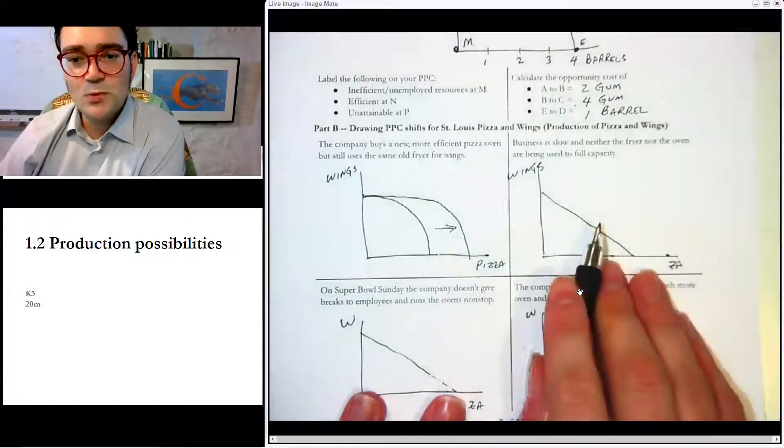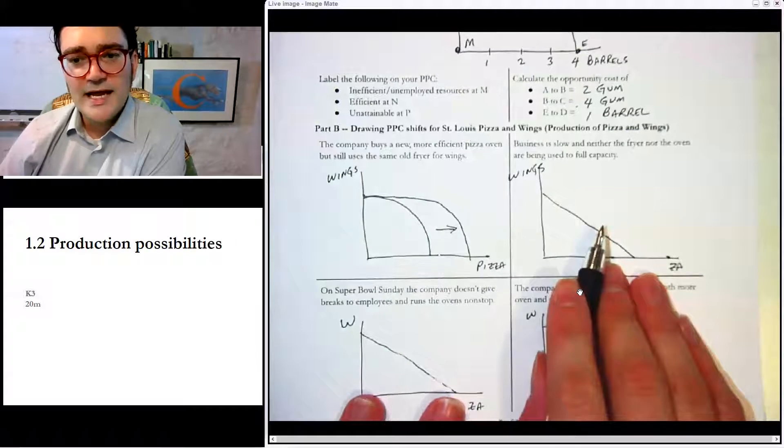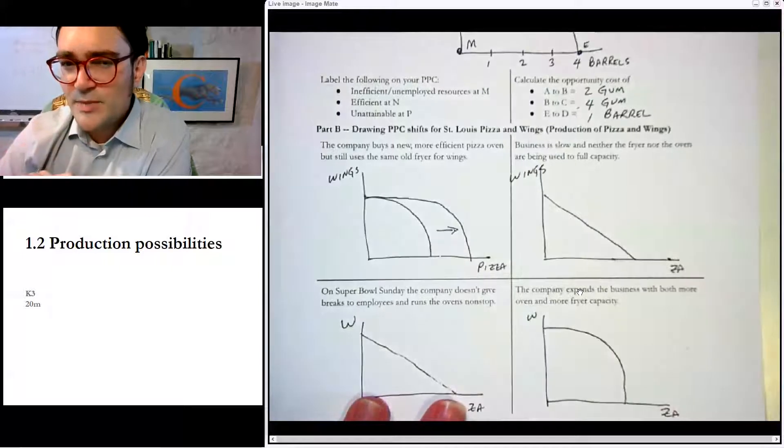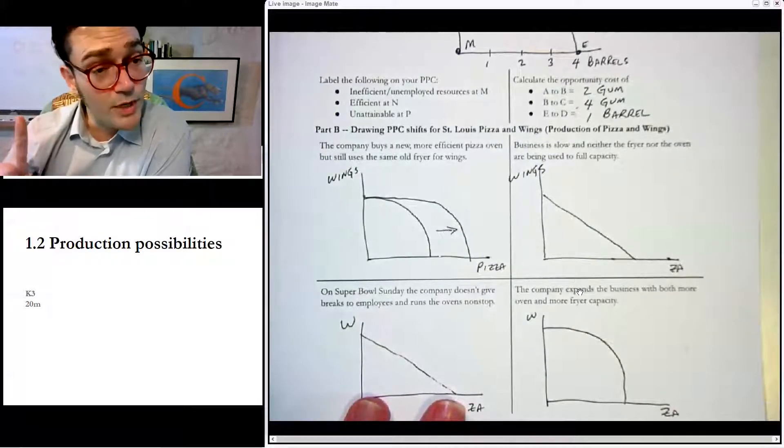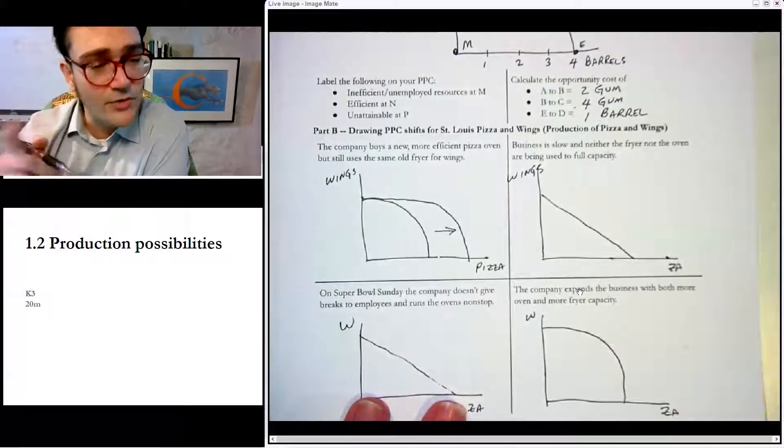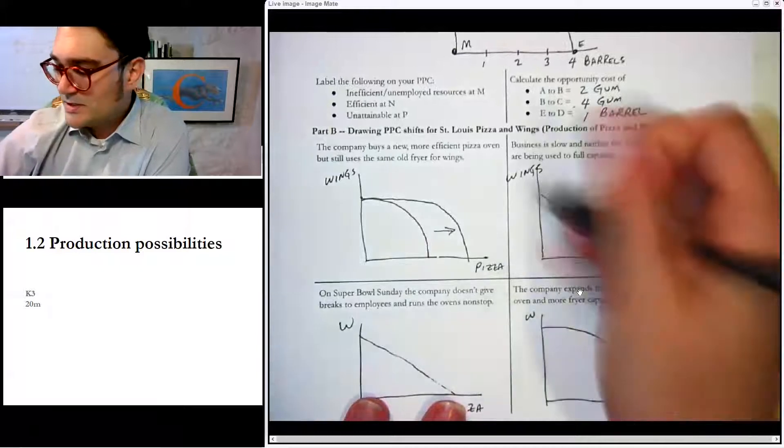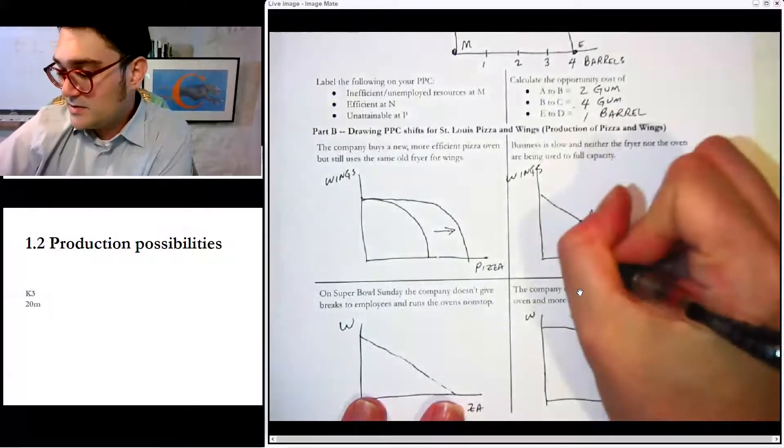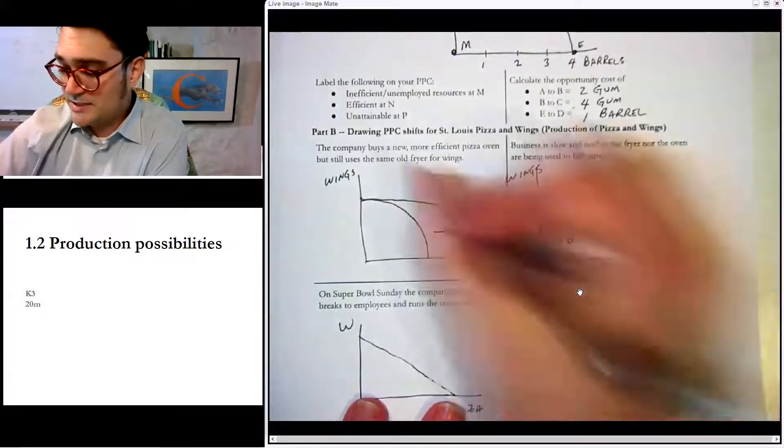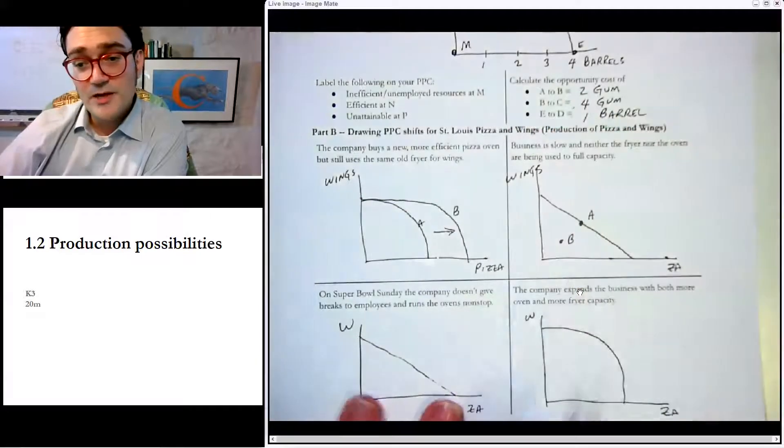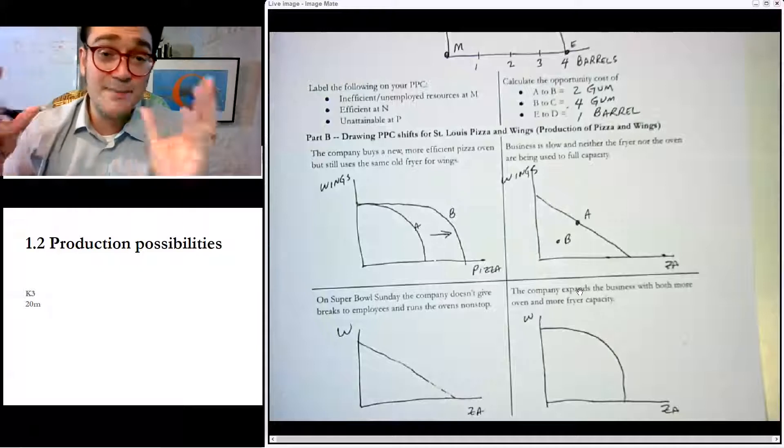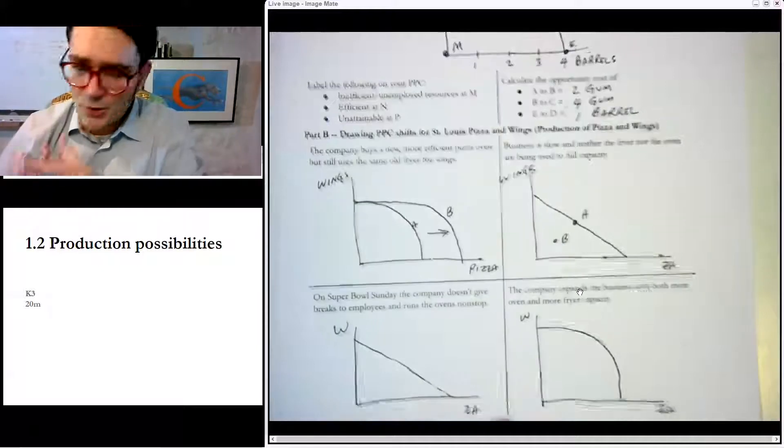Okay. Now, with this one, it says business is slow and neither the fryer nor the oven are being used to full capacity. Now, wait a minute. Does that mean that the fryer and the oven are broken? No. Does it mean that they are somehow less productive? No. It just means we're producing less. So we're actually going to go from point A to point B. We're just going to say they don't produce as many. And so for this one, we'd say they go from curve A to curve B, but in this one, they're going from point A to point B. It's the difference between how much you're producing at any given time and your capacity. We're going to return to that idea over and over and over again.